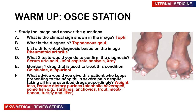Returning to the warm-up OSCE: the clinical sign shown is tophi. The diagnosis is chronic tophaceous gout. A differential diagnosis is rheumatoid arthritis, given the bilateral joint involvement. Two tests to confirm the diagnosis are serum uric acid levels and joint aspirate analysis (plus X-ray). One drug to treat this condition is colchicine or allopurinol. Advice for the patient presenting repeatedly in severe pain despite medication: weight loss (obesity is associated with gout), and reduction of dietary purines — avoid alcoholic beverages, fish like sardines, anchovies, and trout, and certain meats like bacon, turkey, and liver.